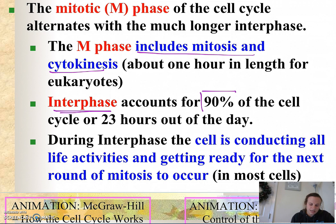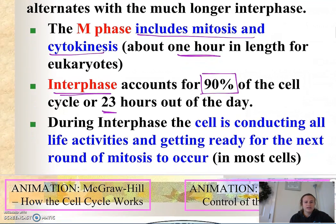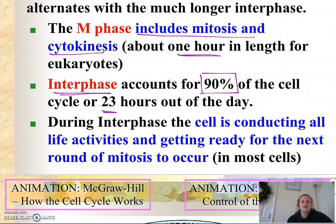Interphase accounts for about 90 percent of the day, or 23 hours out of a 24-hour day, whereas the M phase, mitosis and cytokinesis, would only take about one hour. During interphase the cell is conducting all of the life activities and then getting ready for the next round of mitosis to occur.